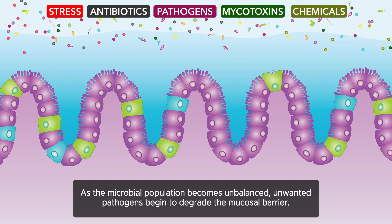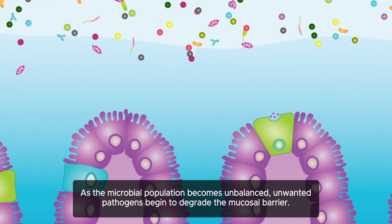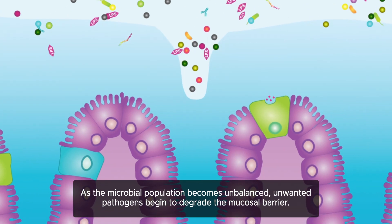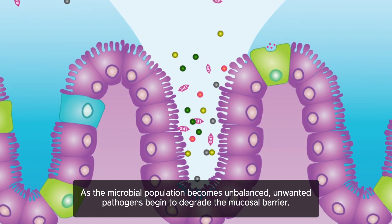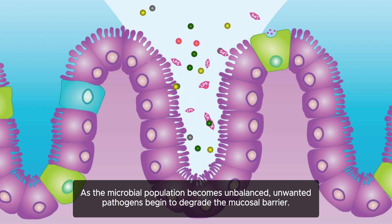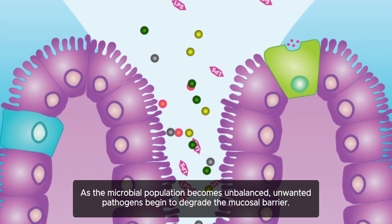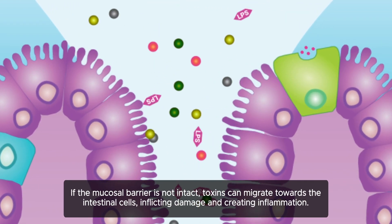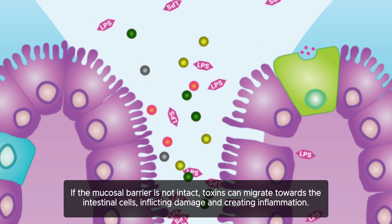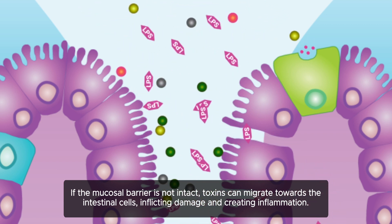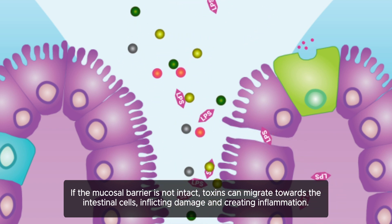As the microbial population becomes unbalanced, unwanted pathogens begin to degrade the mucosal barrier. If the mucosal barrier is not intact, toxins can migrate towards the intestinal cells, inflicting damage and creating inflammation.